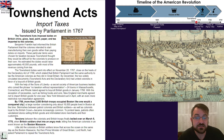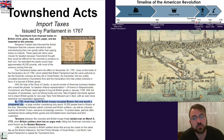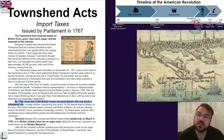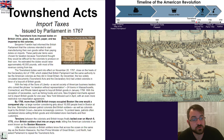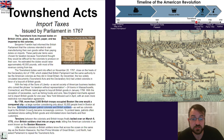By 1769, more than 2,000 British troops occupied Boston like one would a conquered city. Great Britain said, you don't want to pay our taxes? How about these soldiers living in the colonies — the ones you're paying for because of the Quartering Act — sitting in your city and forcing compliance? Skirmishes between Patriot colonists and British soldiers, as well as Loyalists, became increasingly common, considering only 16,000 people lived in Boston at the time.